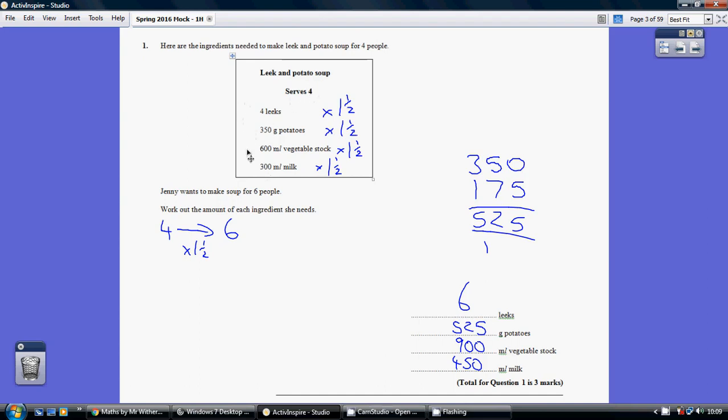And then take those results and multiply that by six to get back up to six people. A quicker way is to spot that these ingredients are for four people, and we need ingredients for six people.